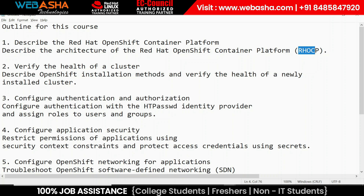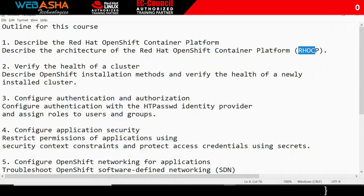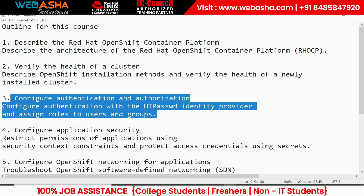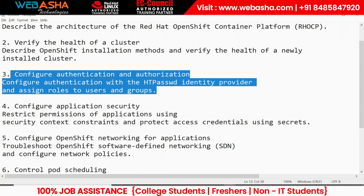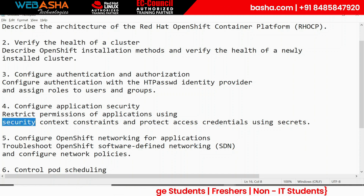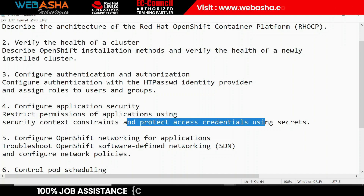The third chapter covers authentication and authorization — for example, creating local users, setting up authentication, and specifying permissions like cluster admin roles on projects or groups. We discuss how to create users and groups, add users to groups, create identity providers, and manage roles. Chapter four addresses security: how to secure OpenShift clusters and applications, including Security Context Constraints (SCCs), which are unique to OpenShift and not present in standard Kubernetes.